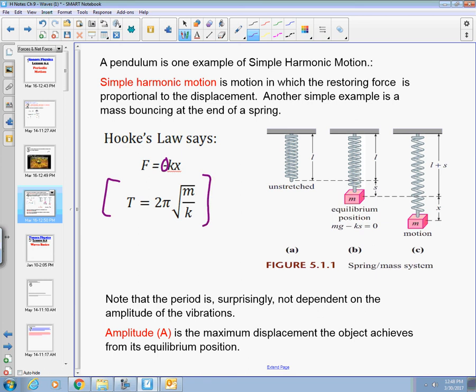And this formula is very similar to a pendulum. However, instead of having our length and gravity, now we're going to use our mass and our spring constant here. One other thing I want to point out is when we're talking about masses on a spring, we deal with this thing called amplitude. And amplitude is talking about our maximum displacement that an object achieves from its equilibrium position.